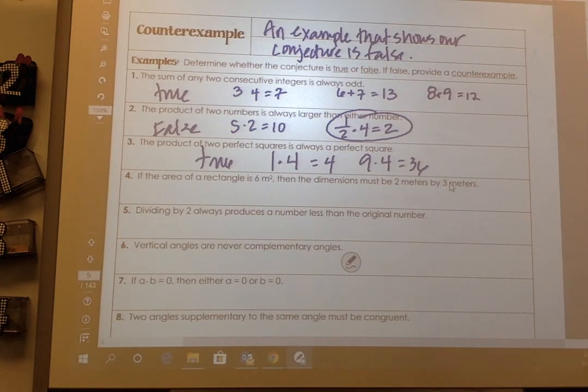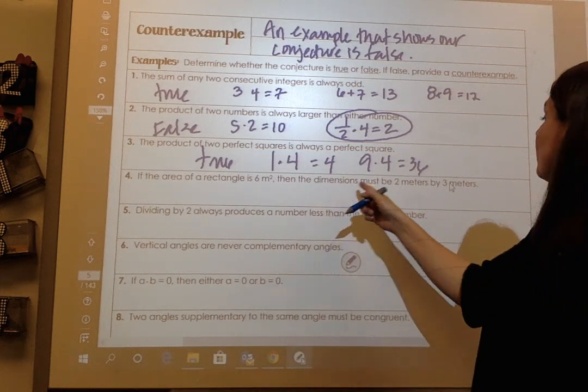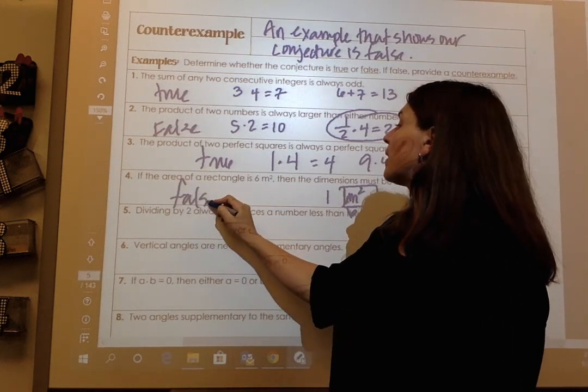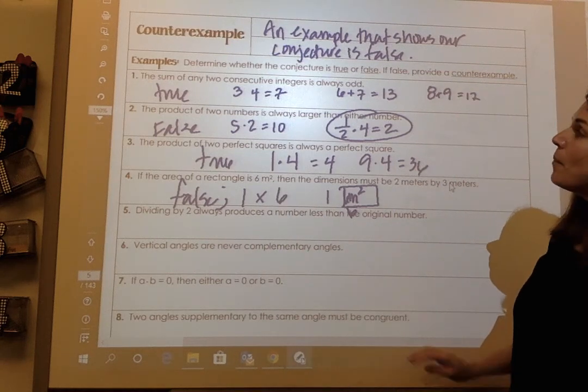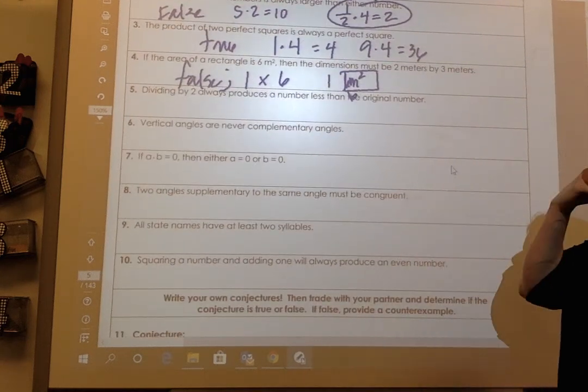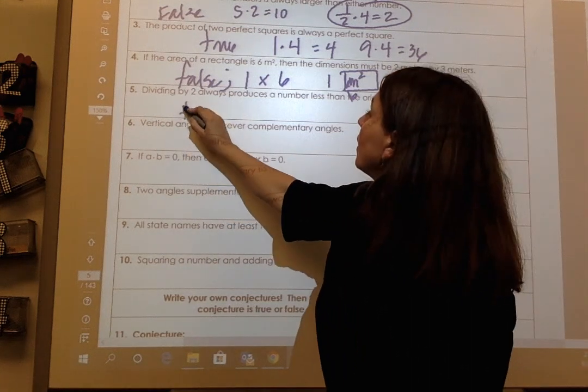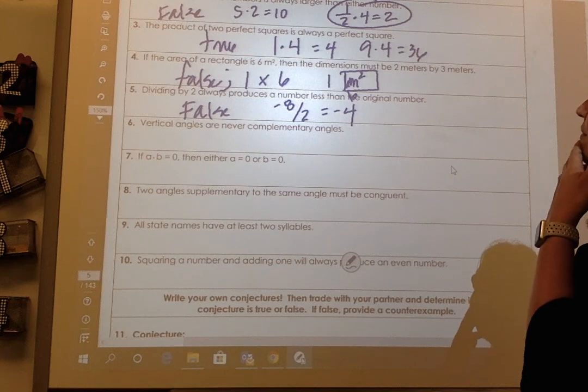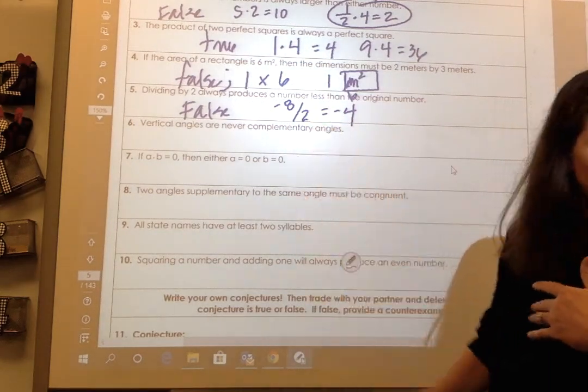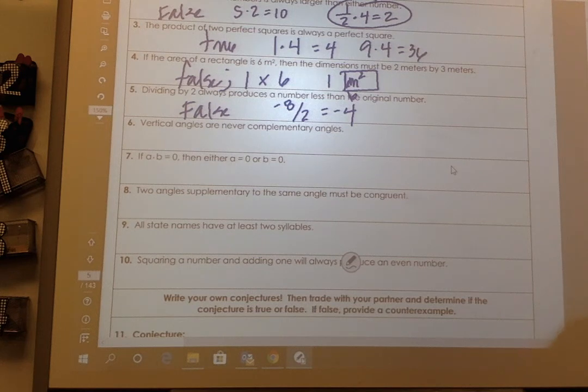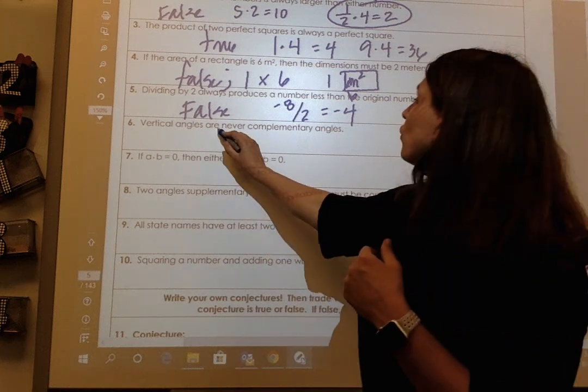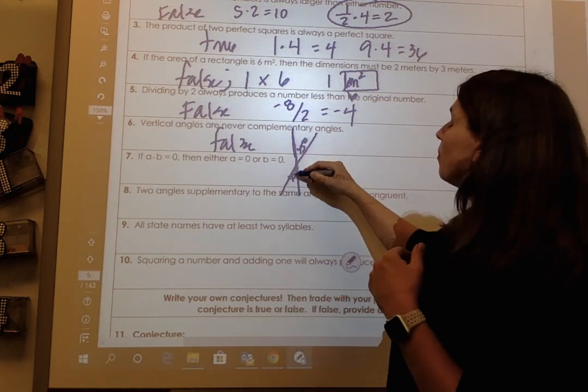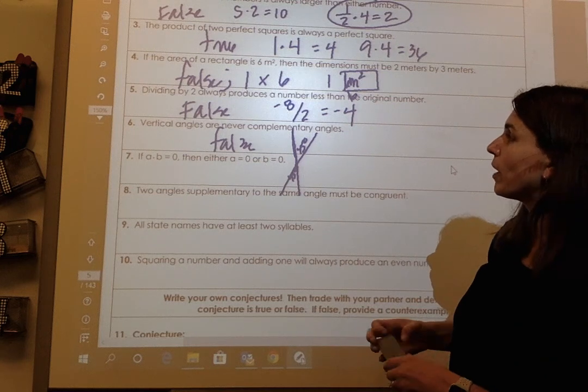Number four: the area of a rectangle is 6 meters, the dimensions must always be 2 meters by 3 meters. That's not true. What about a 1 by 6? That's 6 meter squares. So that's false because I can prove a 1 by 6. So that's what it means by a counterexample. Number five is going to be false because what if you had negative 8? Negative 8 divided by 2 is negative 4. So that's not less than negative 8, that's greater than. So that's going to be false. Vertical angles are never complementary angles. Well, that's not true. What about a vertical angle that both are 45? Both 45s are going to be 90 which are complementary. So that's not true.